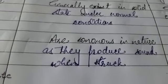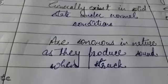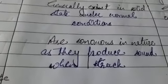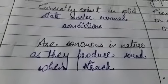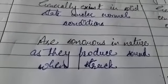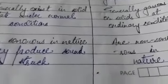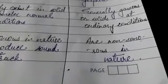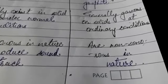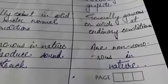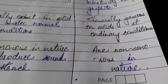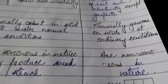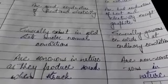Sonority: metals are sonorous — when a metal is struck with a hard heavy object, it produces sound. Whereas non-metals are non-sonorous; even when struck with a hard object, they do not produce sound. Revise this topic well and prepare notes.